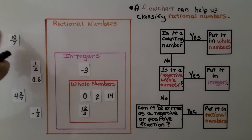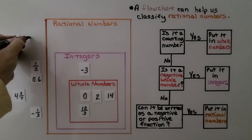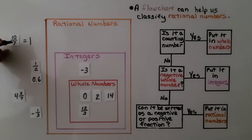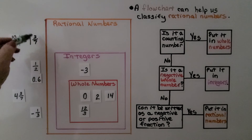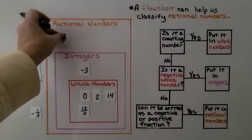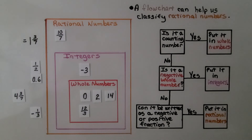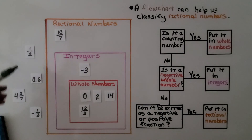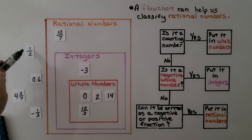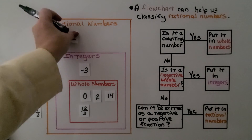Now look at ten sevenths. If we simplify: how many sevens are in ten? Just one, with three left over. That means ten sevenths equals one and three sevenths — it's not a whole number, but it is written as a fraction, so we put it into rational numbers. And one half: it's not a counting number, not a negative whole number, but it is written as a fraction, so it goes into rational numbers.